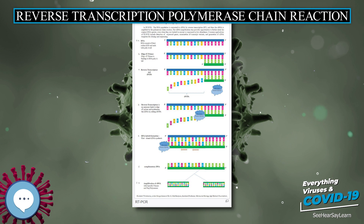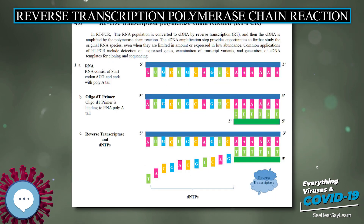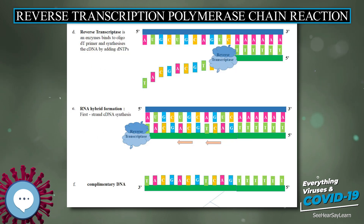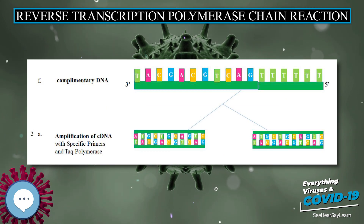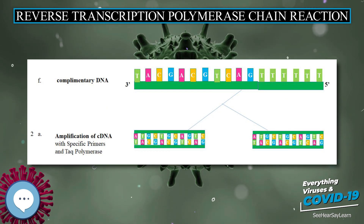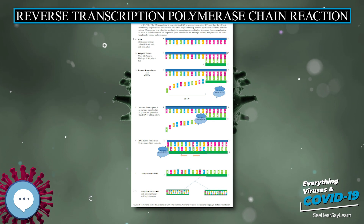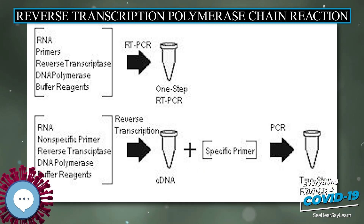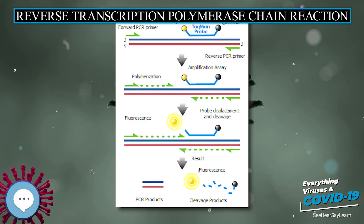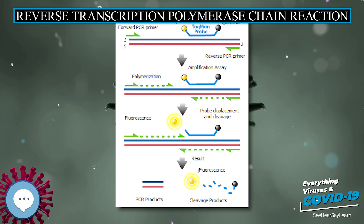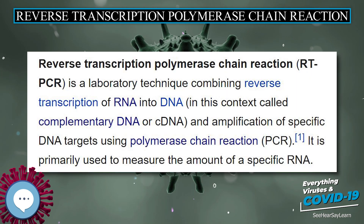Principles: In RT-PCR, the RNA template is first converted into a complementary DNA, cDNA, using a reverse transcriptase. The cDNA is then used as a template for exponential amplification using PCR. The use of RT-PCR for the detection of RNA transcripts has revolutionized the study of gene expression.